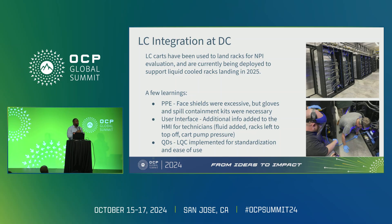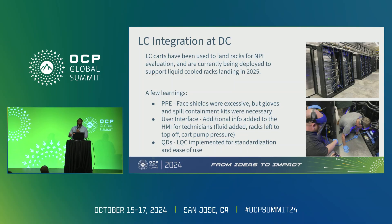Some learnings from developing the LC cart involve PPE, user interface, and QDs. We've been using the cart mainly to land MPI racks for evaluation in our data center. For PPE, face shields were initially used because people feared high-pressure, high-temperature fluid, but we quickly learned that's not a major concern and pressures are relatively low. For the user interface we added information like amount of fluid added, racks remaining for top-off, and cart pump pressure. For QDs, we switched from CGB20 to LQC for supply chain standardization across all equipment.